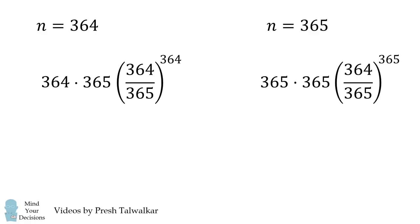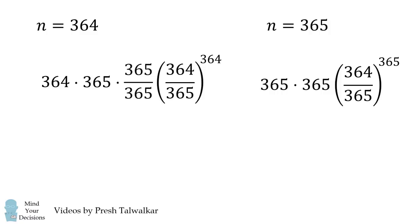To see why, let's convert the first formula into the second. We'll multiply it by 365 over 365, which is equal to 1. Now, let's switch this 364 and 365. We can then group these fractions together and raise the exponent, and lo and behold, we have two equal formulas.